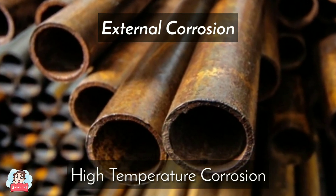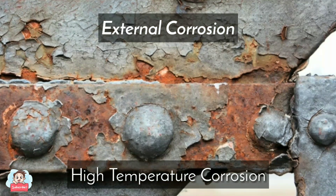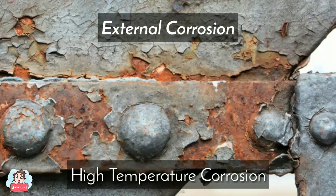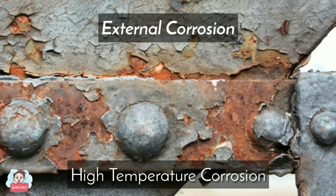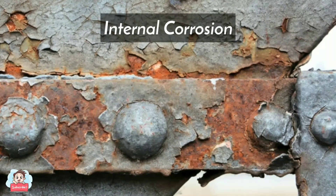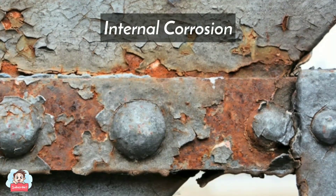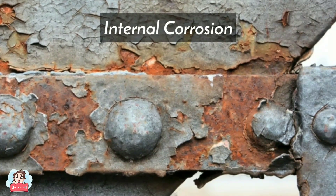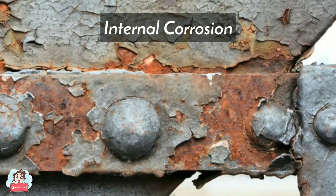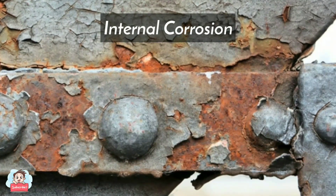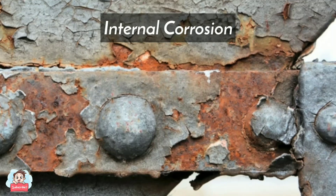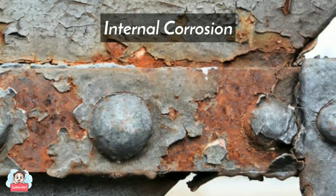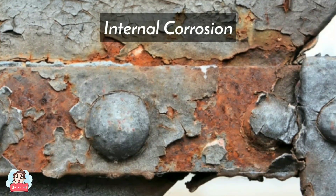High temperature oxidation and other corrosion types are commonly modeled using the Deal-Grove model to account for diffusion and reaction processes. Internal Corrosion. The same principles of external corrosion control can be applied to internal corrosion, but due to accessibility, the approaches can be different. Thus special instruments for internal corrosion control and inspection are used that are not used in external corrosion control.